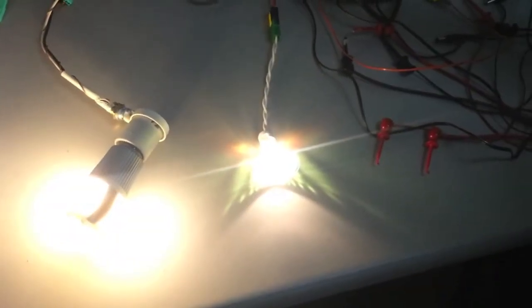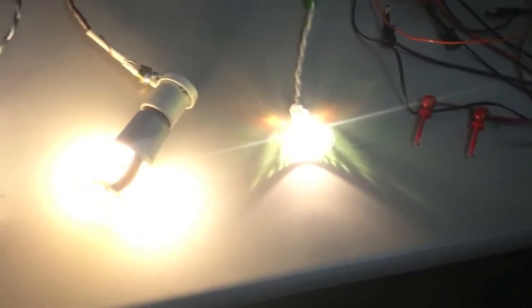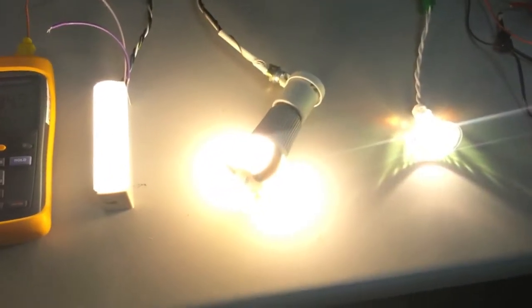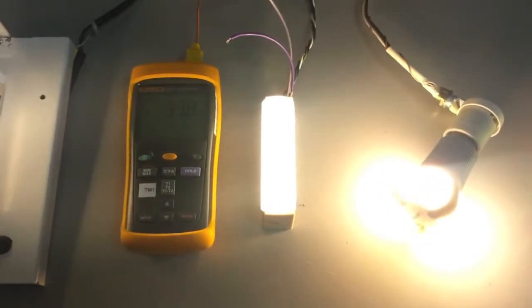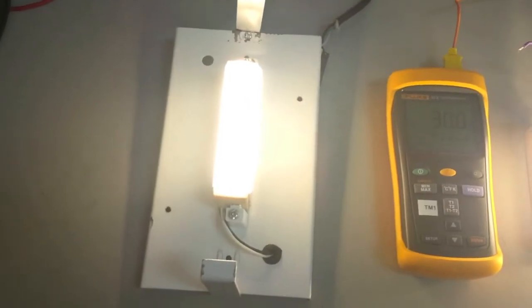We're here in the Terralux lab today to determine what technology runs hotter. A 20 watt halogen, an LED light bulb, a Terralux LED linear engine, or a Terralux linear LED engine mounted inside of a fixture.